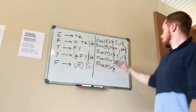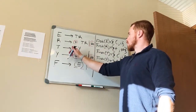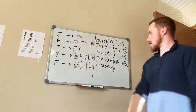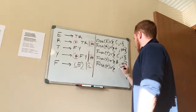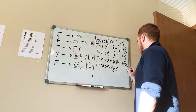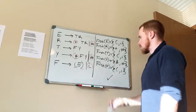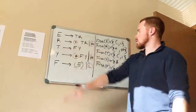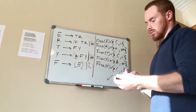Last but not least, First(F). We've hit F a few times already. Looking at the rule for F, open parenthesis is one of the first terminal symbols, and the other terminal symbol you can generate is lowercase i. So First(F) is open parenthesis and i. That's how you find the first set for a grammar — pretty straightforward. In the next video, I'll do the follow set.